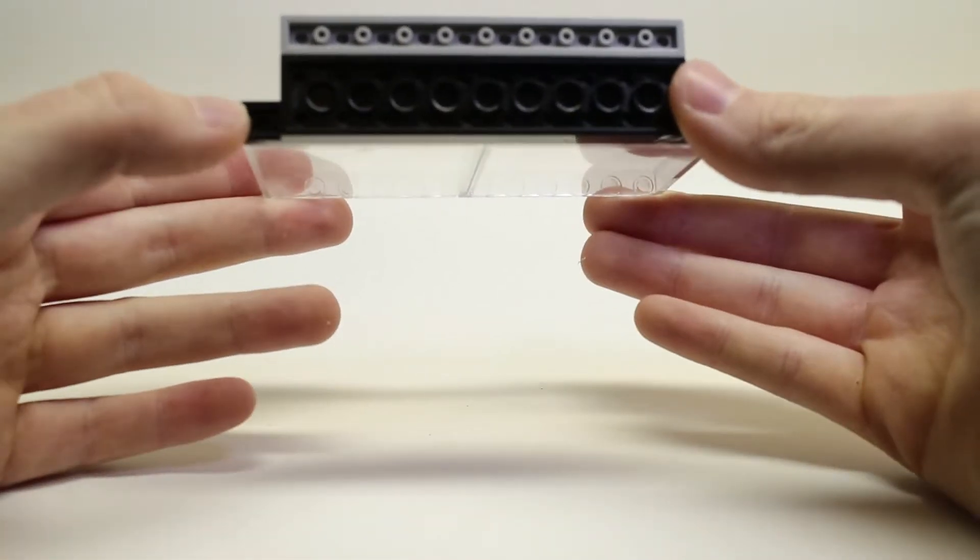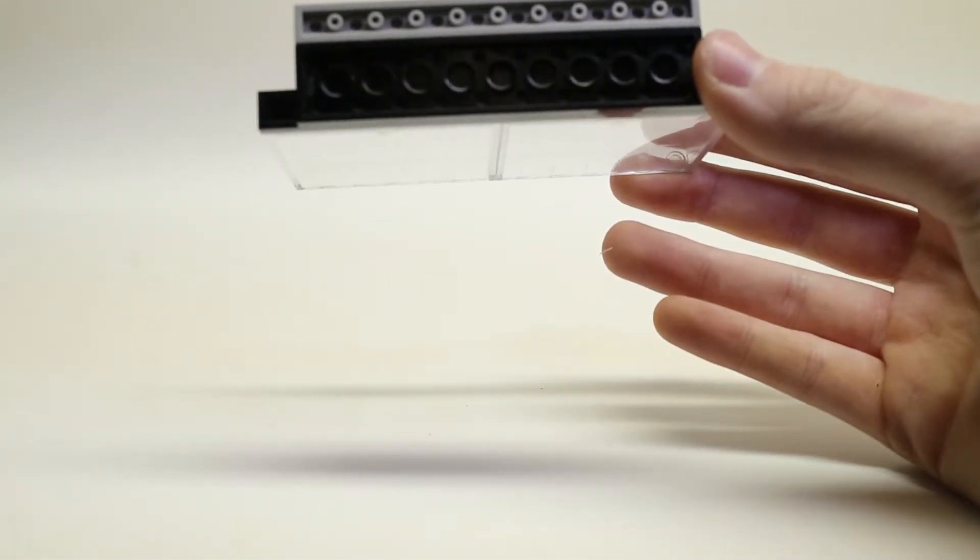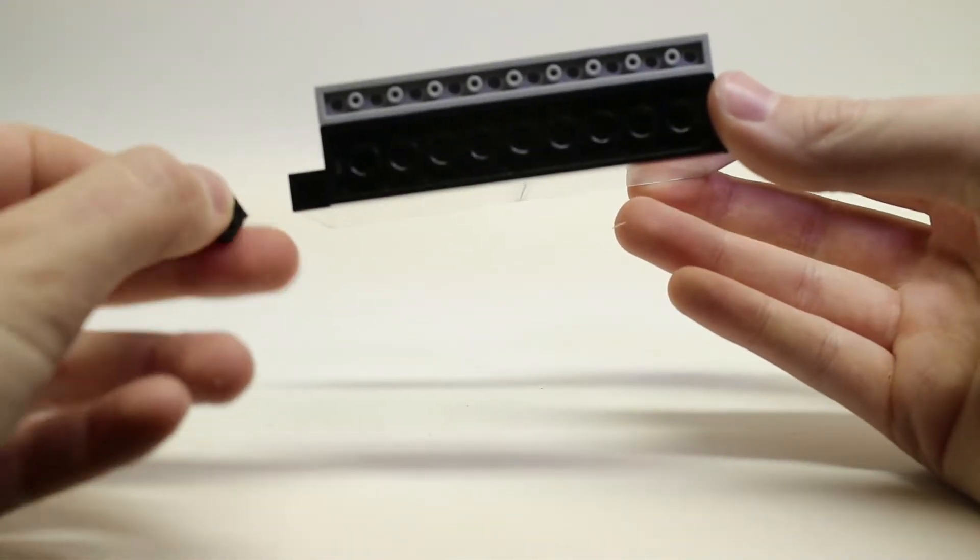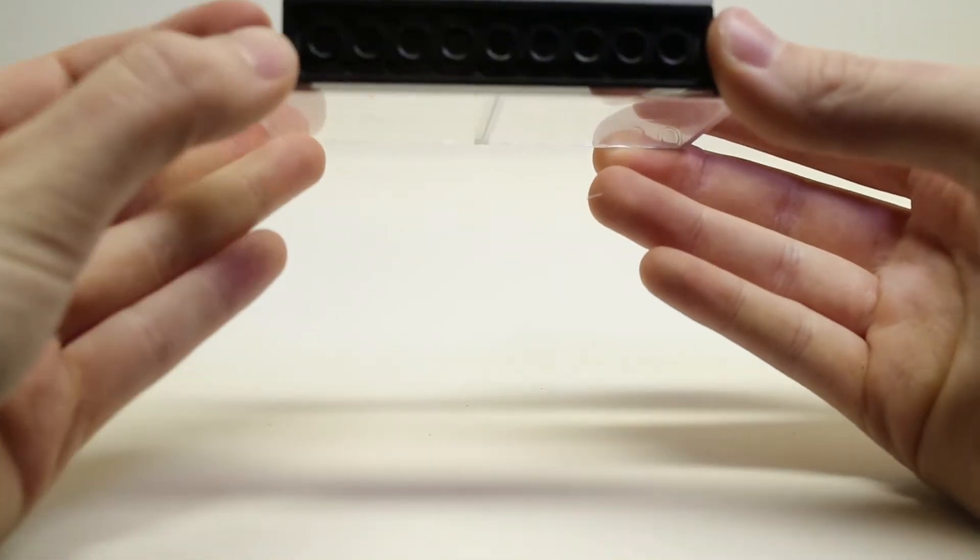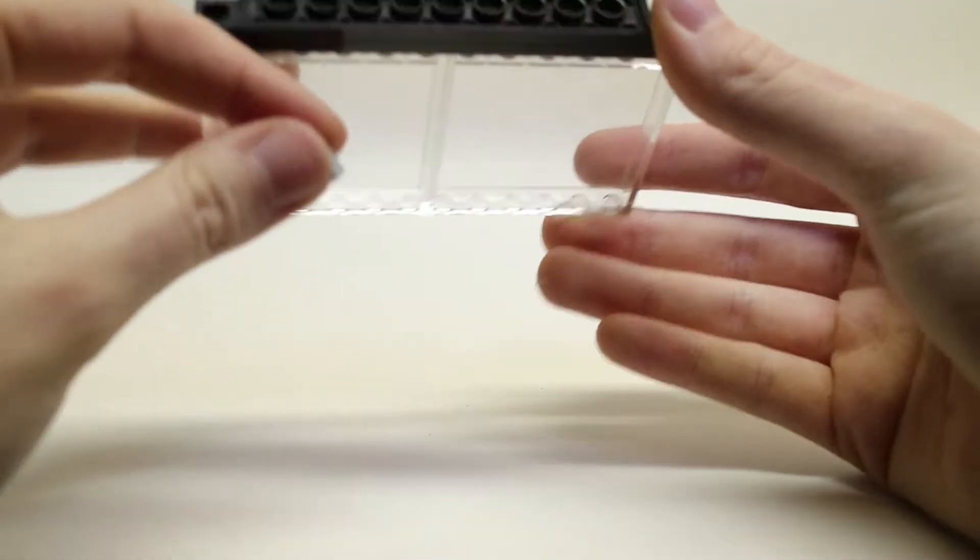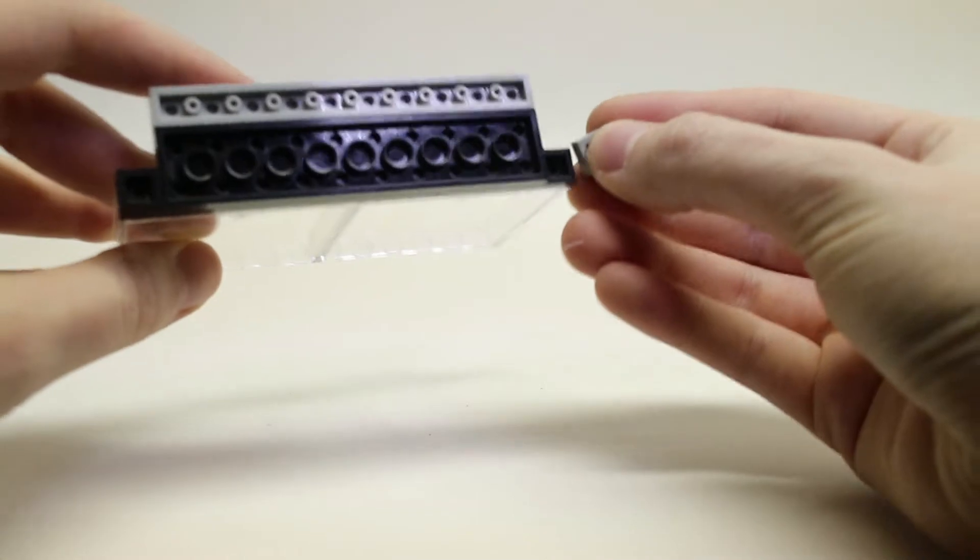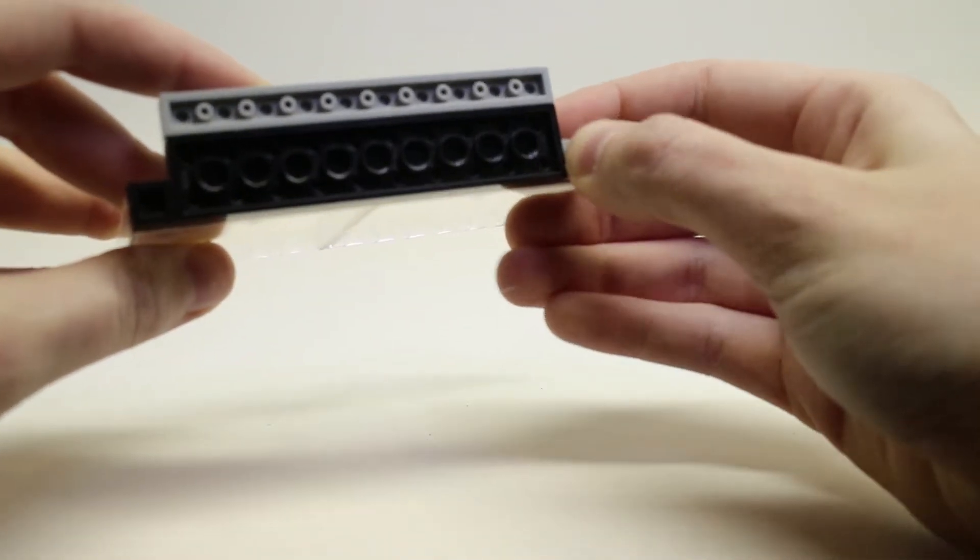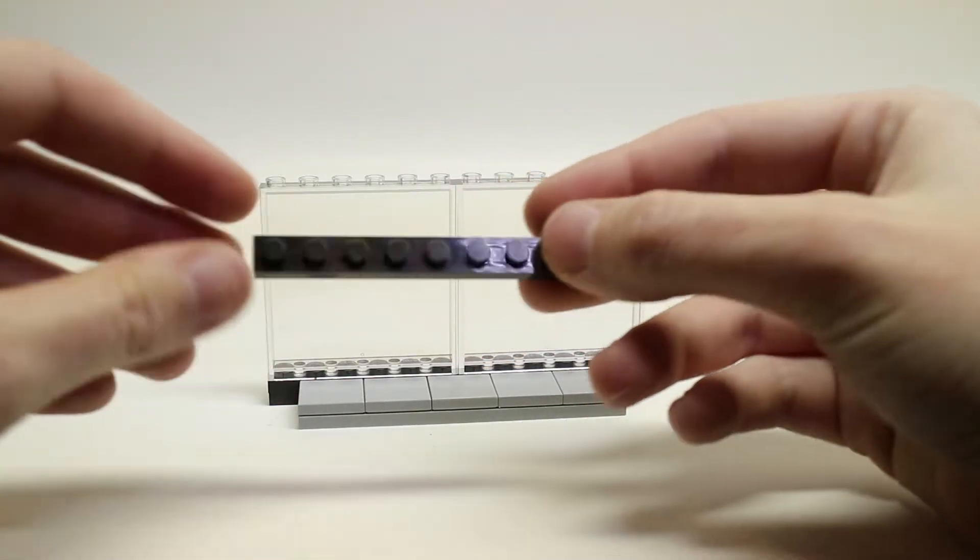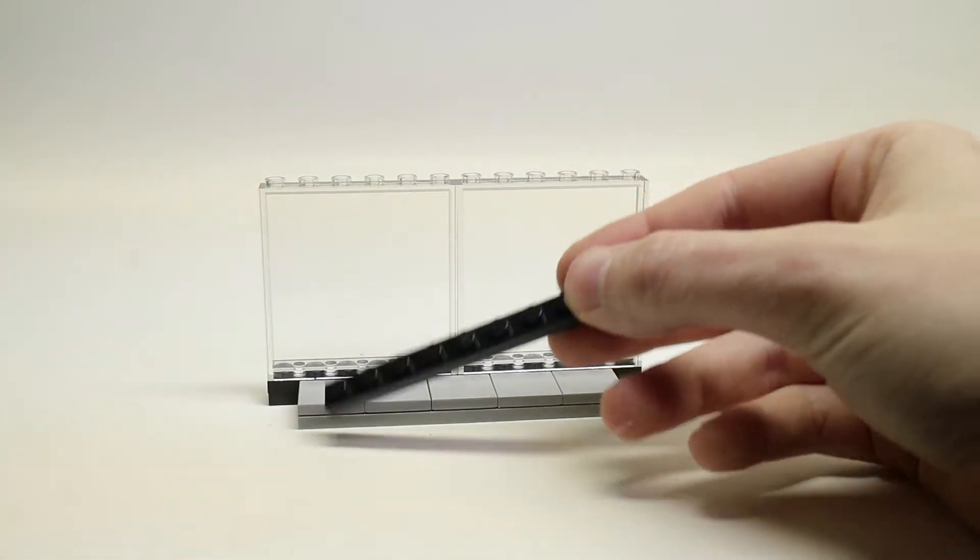Next you'll fill in these two gaps with 1 by 1 tiles. I had to substitute a light bluish gray 1 by 1 plate, but ideally you'll want two 1 by 1 black plates. Next you'll take another 1 by 8 black plate and a 1 by 4 black plate.